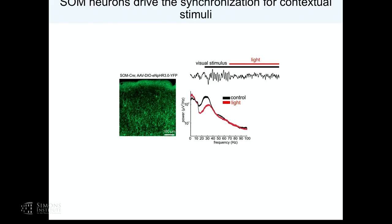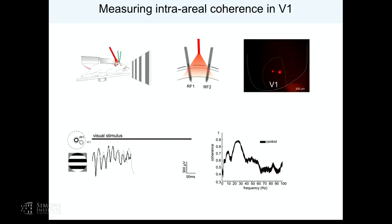Somatostatin cells seem to be doing two things: normalizing the population to drive sparse coding for surround suppression, while at the same time the spikes that are left behind are extremely synchronous. One way to think about it: they're removing the non-synchronous spikes. The idea is they're powerfully synchronizing the cortex, particularly across distant regions.